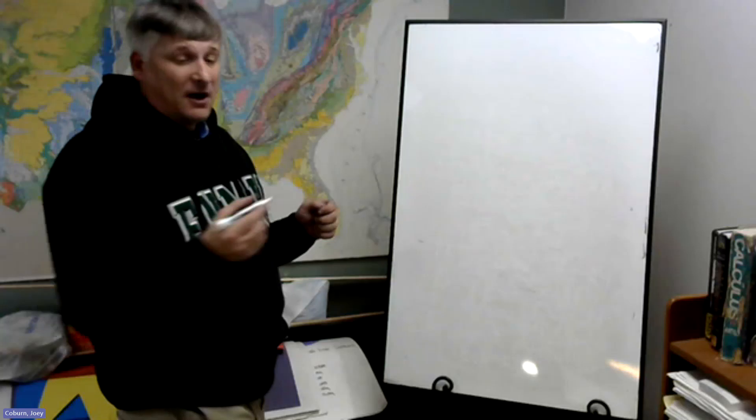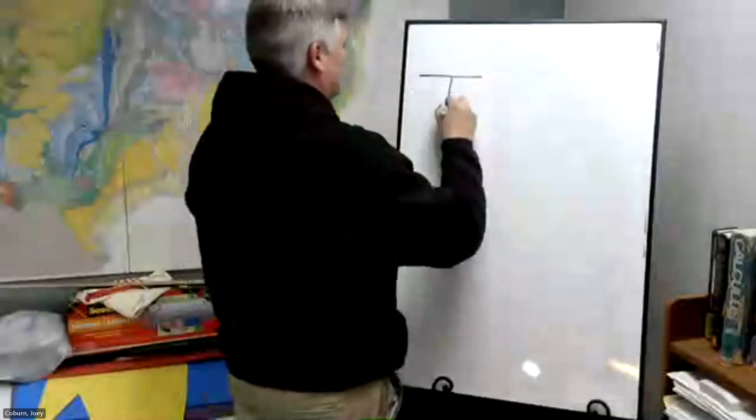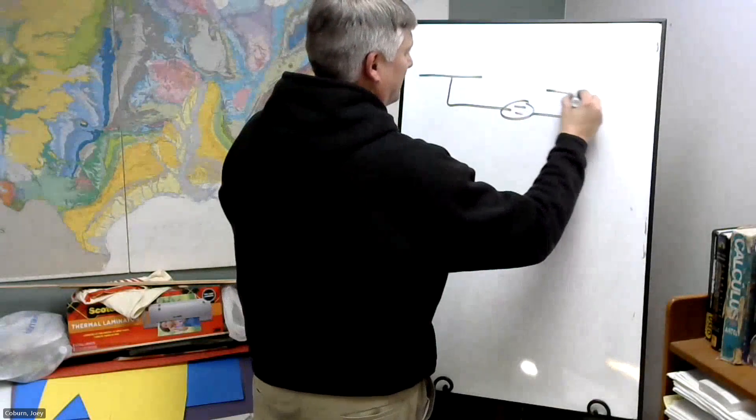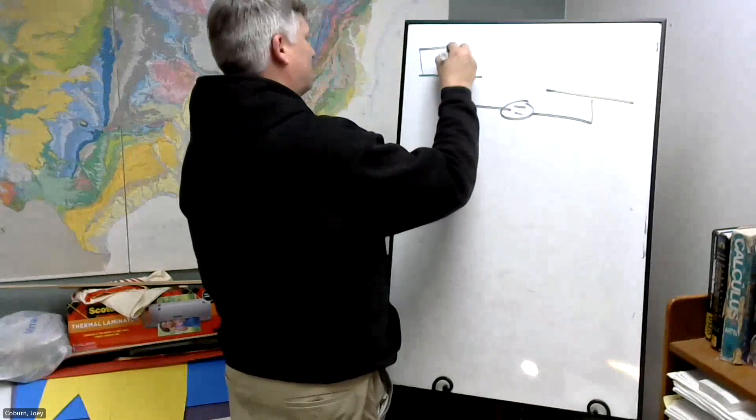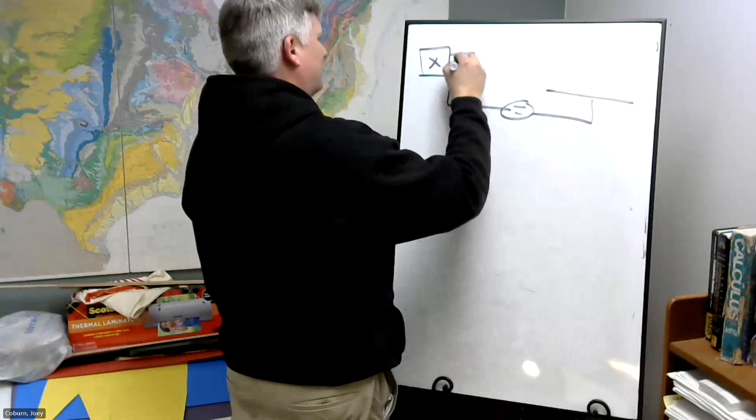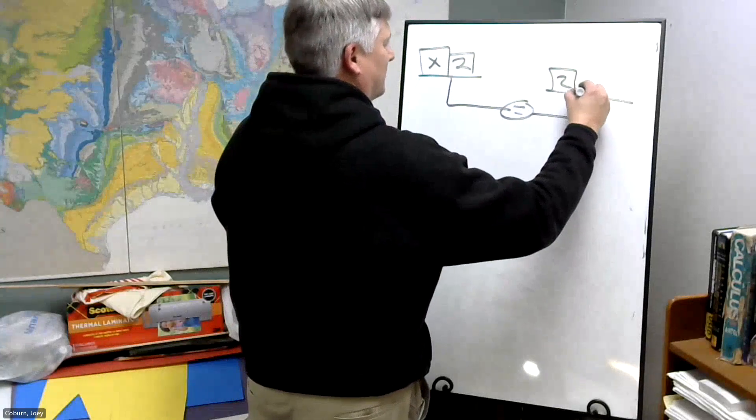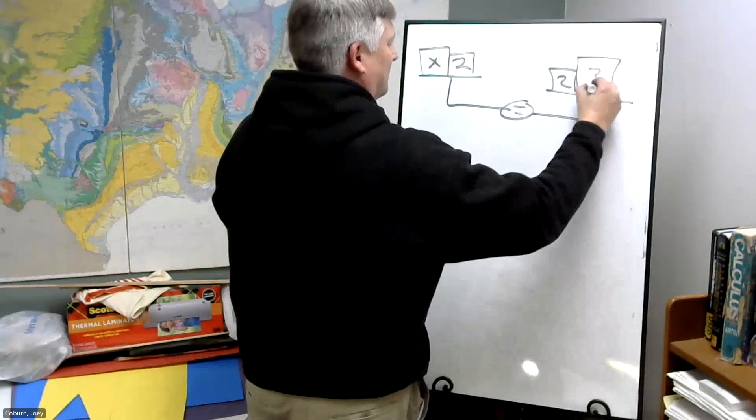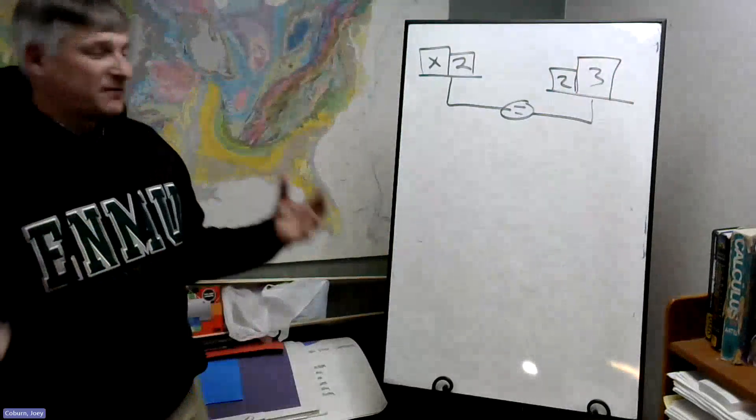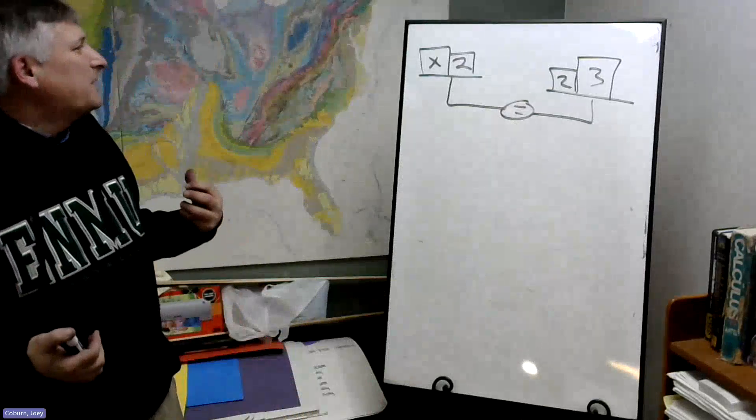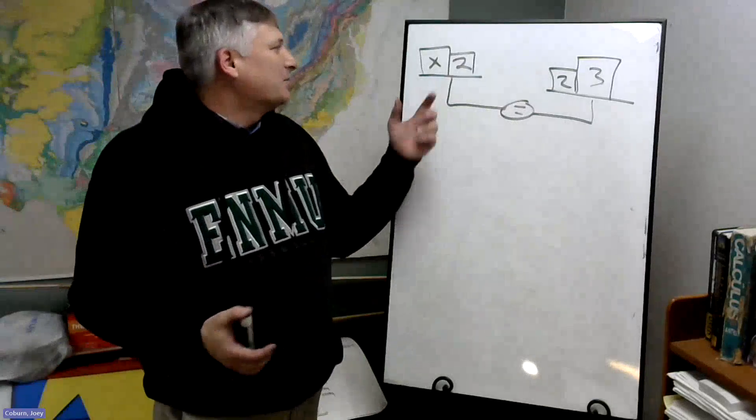So let's consider the following. Let's say we're given a scale and it's balanced. So how can we figure out what X is?